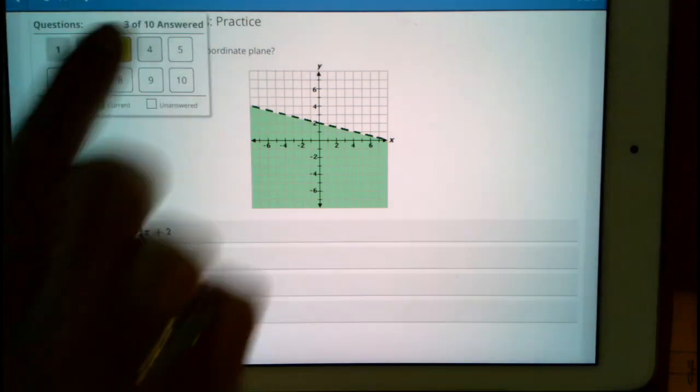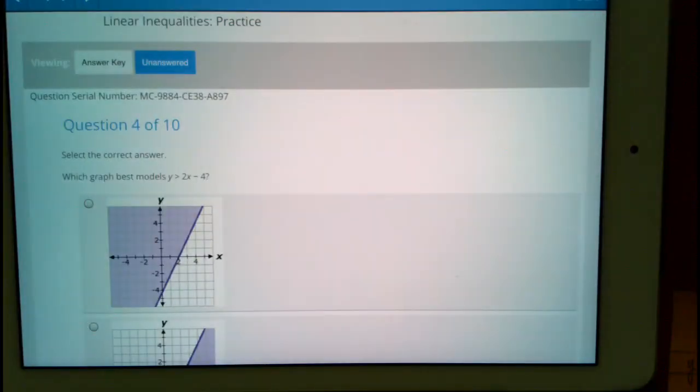When we flip over to the next problem, similar, it says which graph best models y is greater than 2x minus 4? So the fact that we just have greater than means that we're not going to have a solid line.